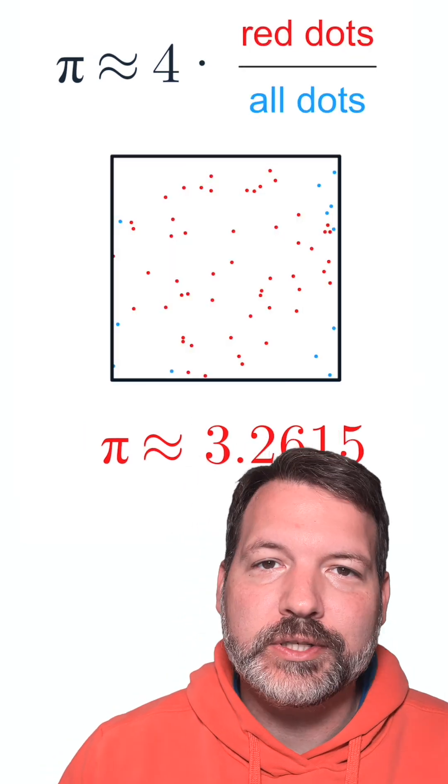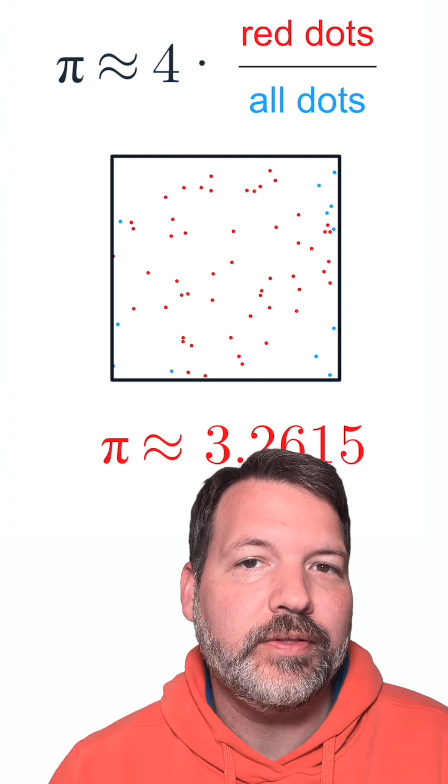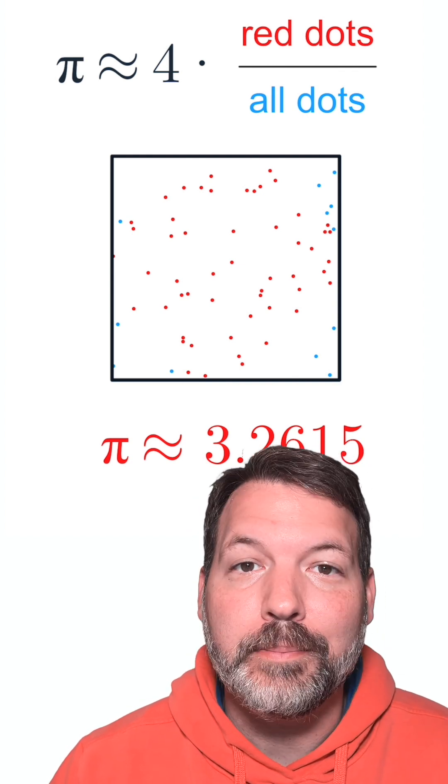The reason this is working, of course, doesn't have anything to do with the actual digits. Instead, the digits are essentially functioning like a Monte Carlo simulation.